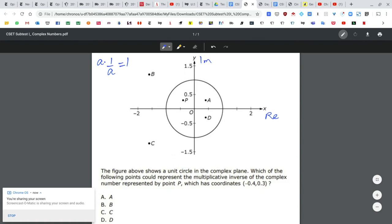So the question says, which of the following points could represent the multiplicative inverse of the complex number represented by point P, which is here, which has coordinates negative 0.4, 0.3.